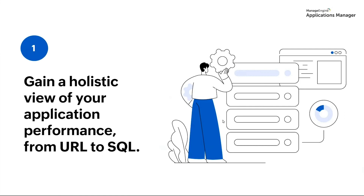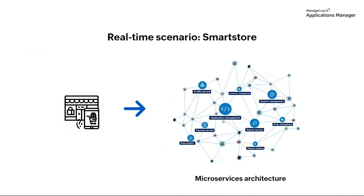With that, let's get started with the first topic: gaining a holistic view of your application performance from URL to SQL. We're going to take a real-time example of an e-commerce company — we're calling them Smartstore for privacy purposes. Let's consider Smartstore to be a popular e-commerce platform that consists of a microservices architecture. Troubleshooting is always taxing, but microservices can make it even more cumbersome as developers have to correlate logs, metrics, and all other diagnostic information from multiple lines of services. The higher the number of services, the more complex the diagnosis.